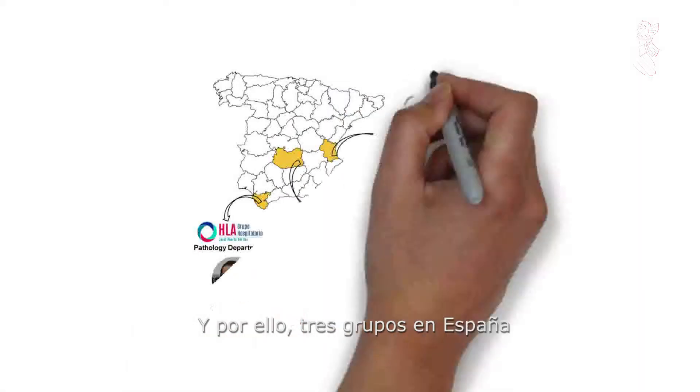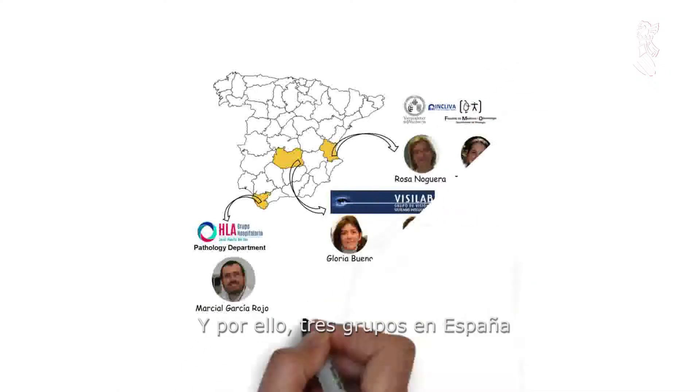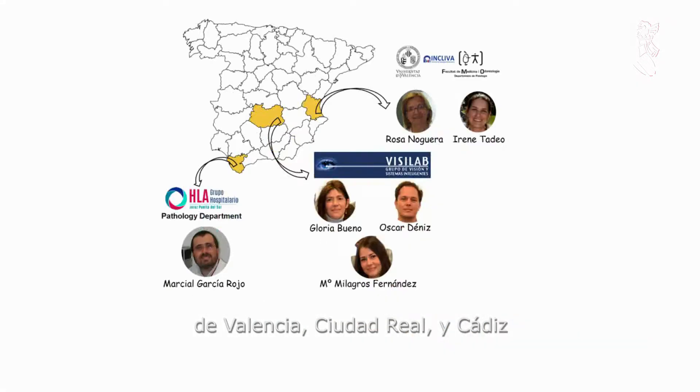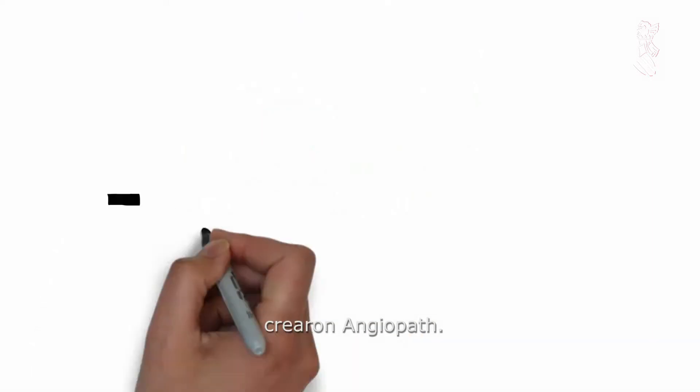As three groups in Spain did, from Valencia, Ciudad Real and Cádiz, which created angiopath.